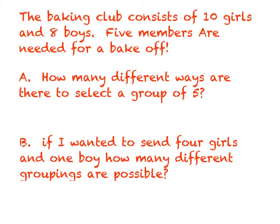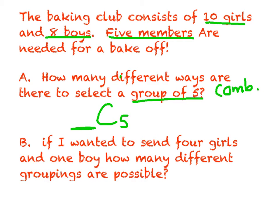The baking club consists of ten girls and eight boys. So I've got ten girls, eight boys. Five members are needed for a bake-off. Question A, how many different ways are there to select a group of five? So permutation or combination is our first decision again. Are you just picking five or are you assigning them positions and placement? Well, I think you're just picking five people for the bake-off. So I would say combination. So I know I need a combination and I know I'm picking five. Now remember, this is how many you have to choose from. How many different people do you have to choose from? Well, I would say you had ten girls and eight boys. So I would say that's 18 different people to choose from. Which gets me 8,568 different combinations.